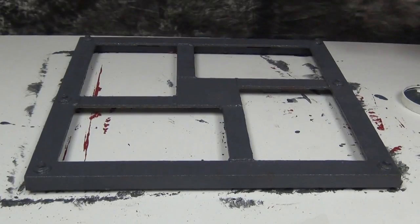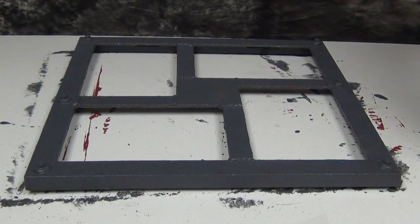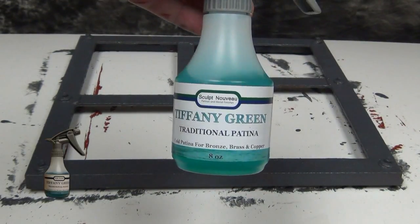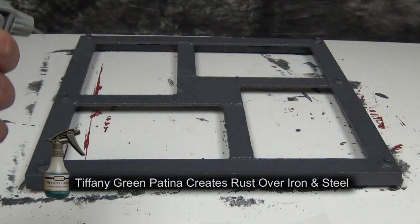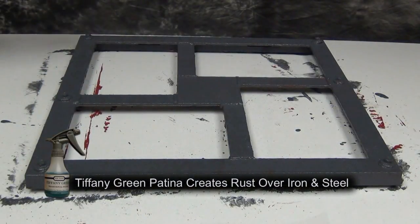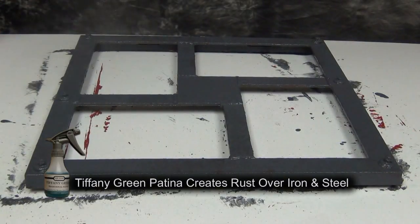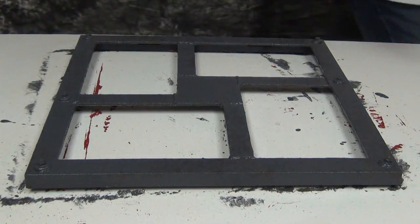Speaking of patina, it's crucial that you apply your patina while your metal coating is still wet. You'll find that once the metal coating dries, it seals in those metal particles and will make it impossible for those particles to react with the patina.